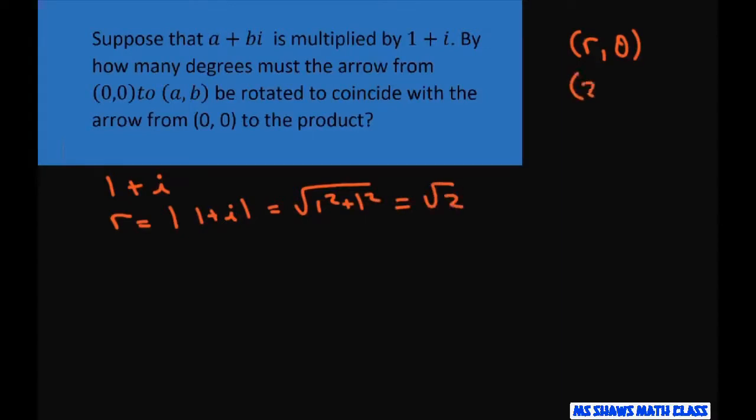So that's square root of 2, and our angle is going to be tan inverse of 1 divided by 1, which is just 1, which equals 45 degrees. And we're in quadrant 1.